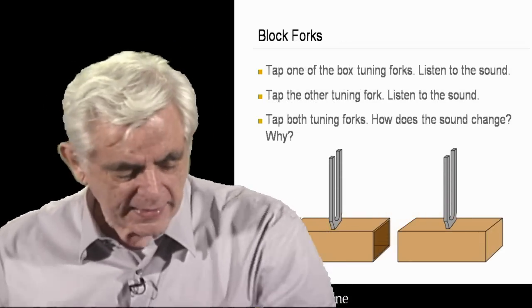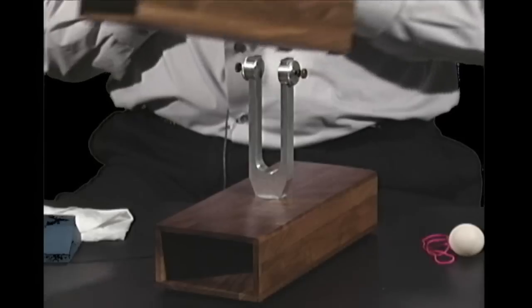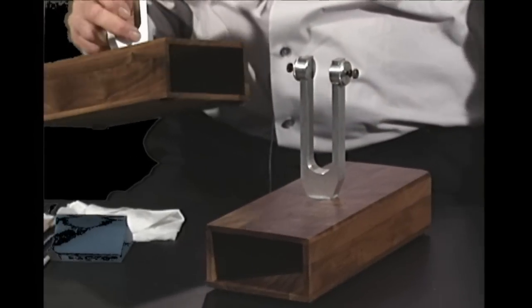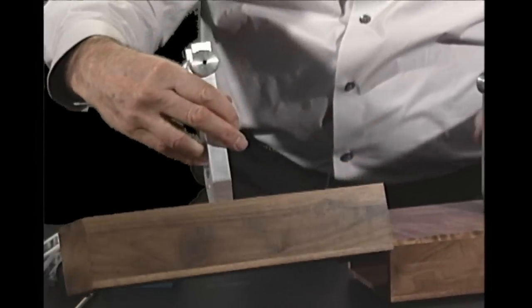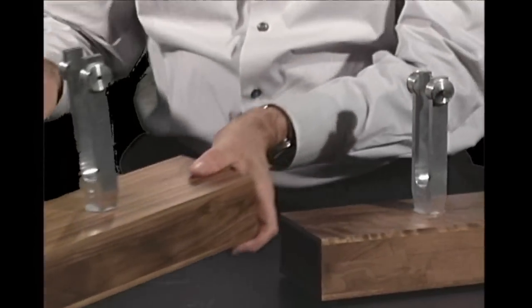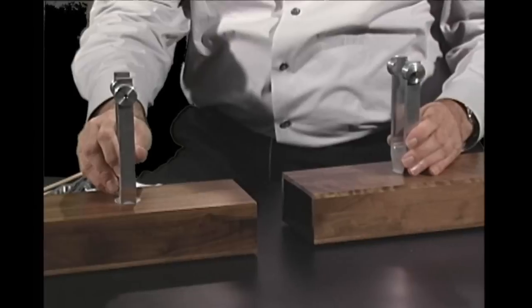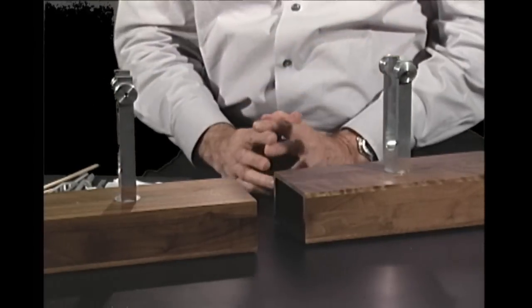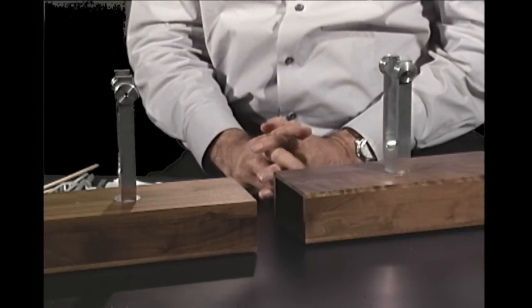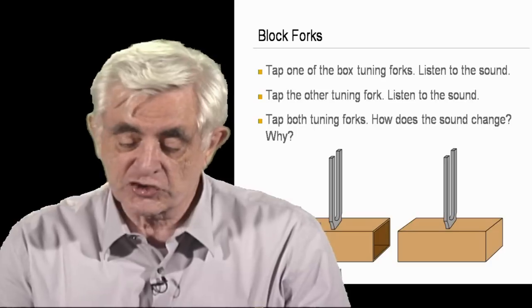One more thing with this, if you have two of these boxes here, these again are available from science catalogs, these are actually called resonating tuning forks. Now a resonating tuning fork means you've got two tuning forks that are at slightly different frequencies. In other words, they vibrate at different speeds. And that causes the pitch to change.